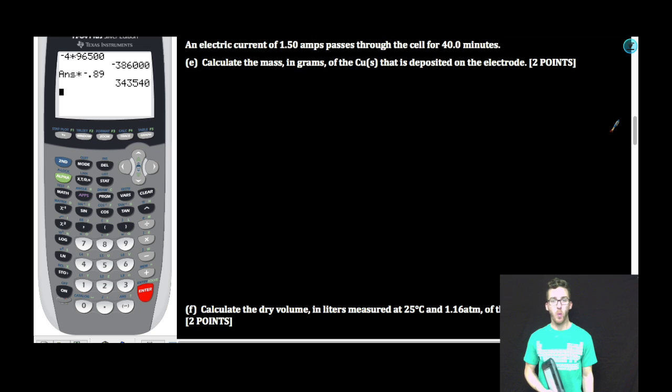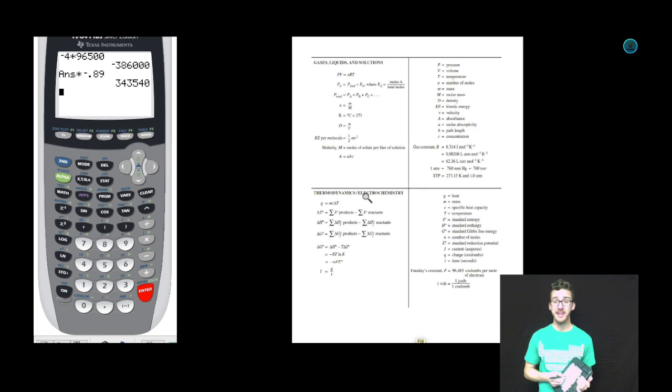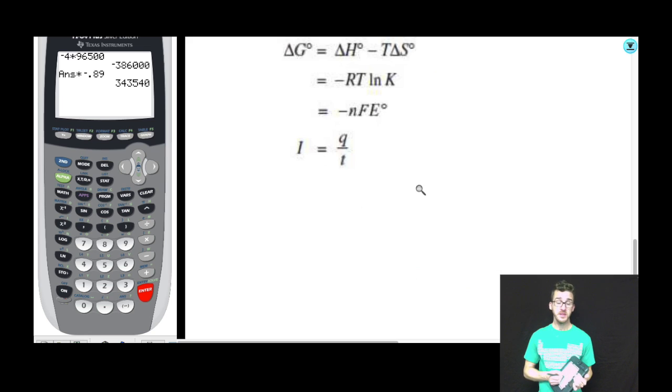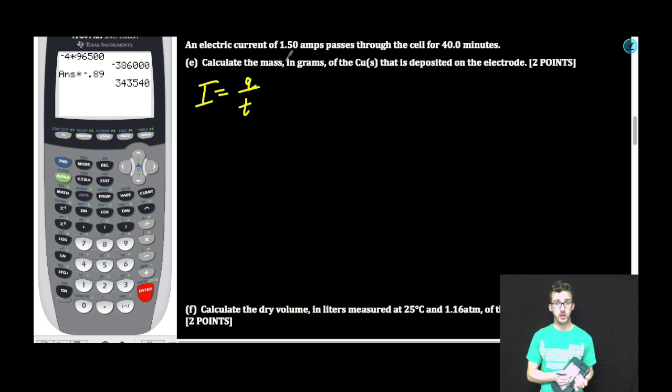An electric current of 1.50 amps passes through the cell for 40.0 minutes. Part E. Calculate the mass in grams of the copper that is deposited on the electrode. Once again, we're going to go to our handy dandy formula chart to save us. This time we're looking at the equation here where our current is equal to charge over the time in seconds. We're told our current is 1.50 amps coulombs per second. The amount of charge per second that passes through our cell is equal to Q over T. Be cautious.